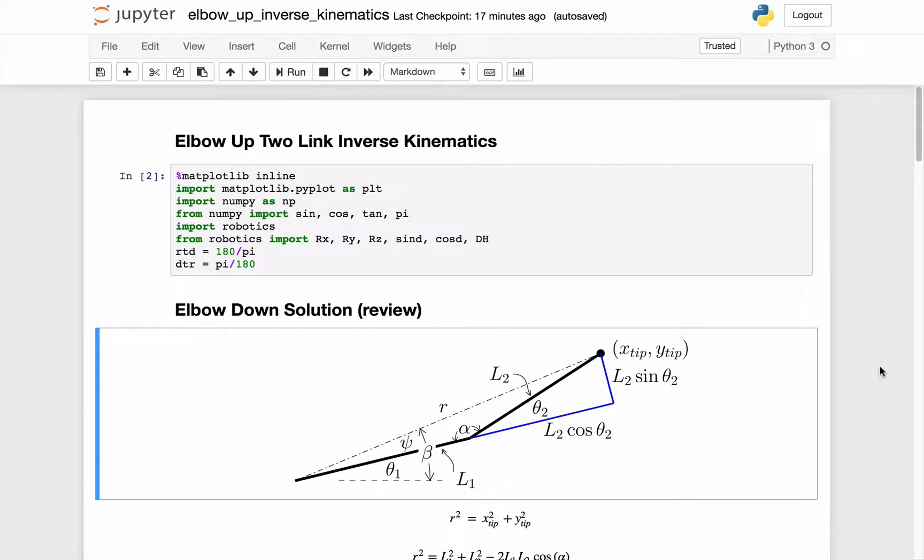But a number of my students are struggling with the elbow-up solution, and specifically the signs, the S-I-G-N positive and negative signs, for the elbow-up solution to this two-link inverse kinematics problem. And it's just a smaller part of a bigger project that we're working on in a senior elective robotics class.